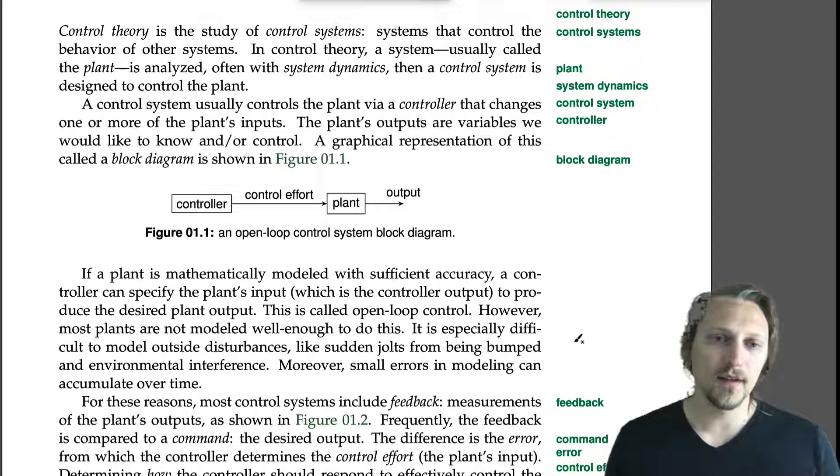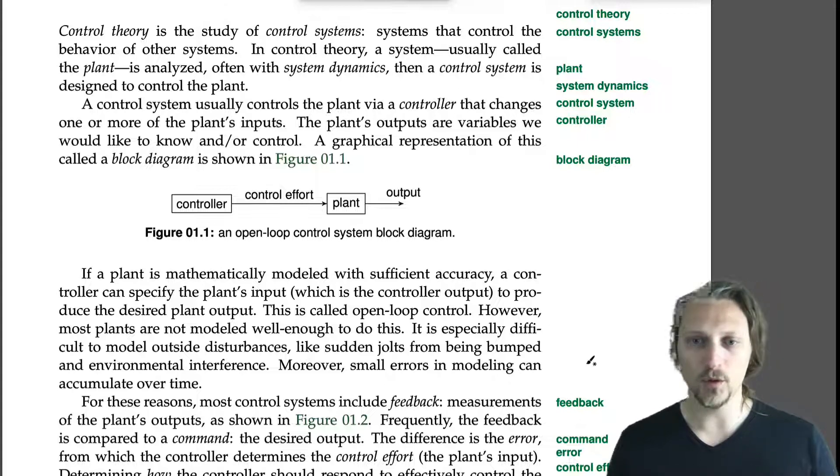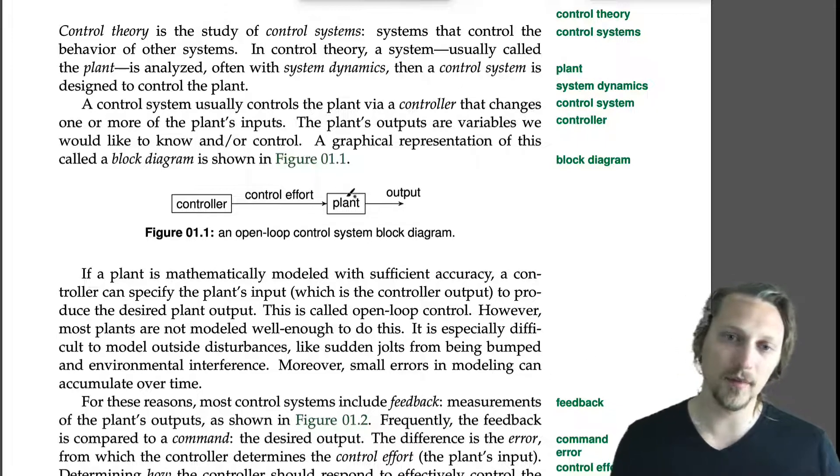If a plant is mathematically modeled with sufficient accuracy, a controller can specify the plant's input, which is of course the controller output, to produce the desired plant output. So if you know what's going on in the plant really well, you can choose what the control effort should be such that your output is what you want it to be.